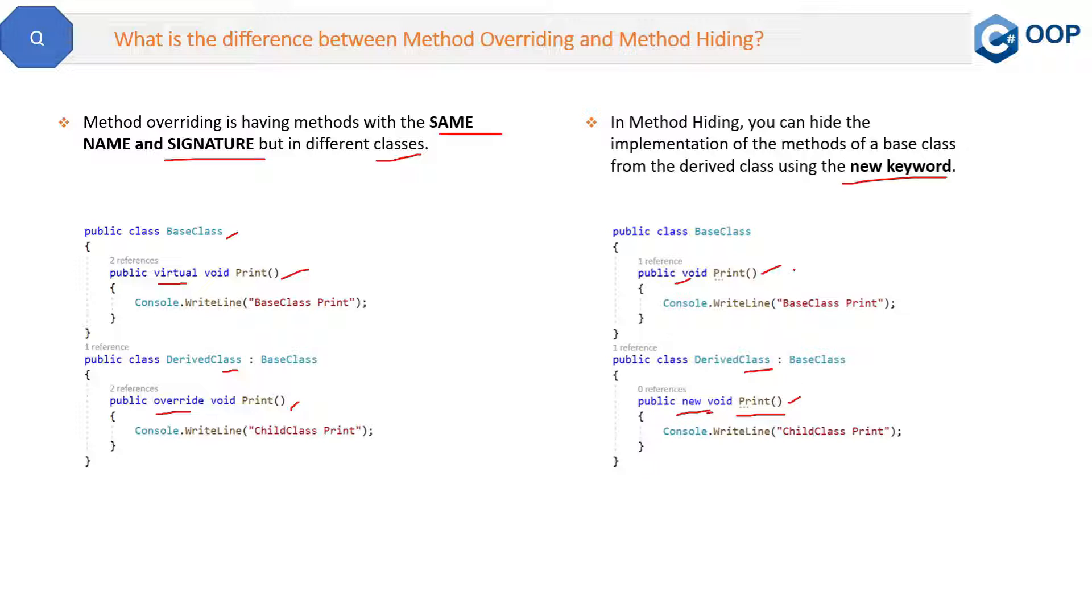In other words, in overriding you are overriding the method, but in method hiding you are completely redefining the method. They have no connection now. This is the answer to this question.